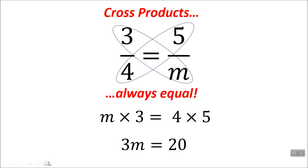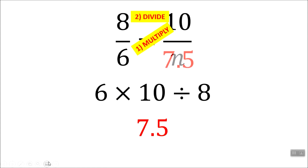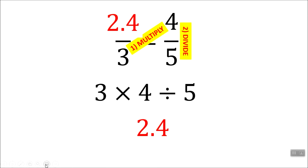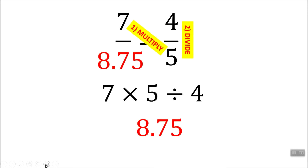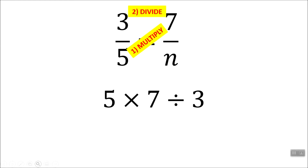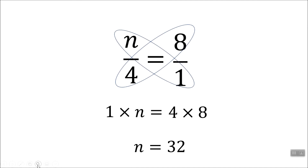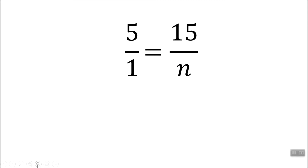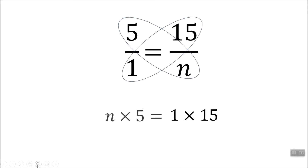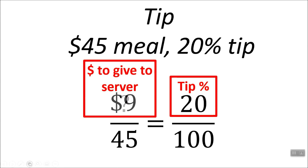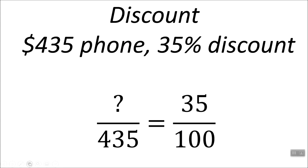Now check out the ricochet technique. You can use a proportion. One, two, three, four — you can use a proportion.